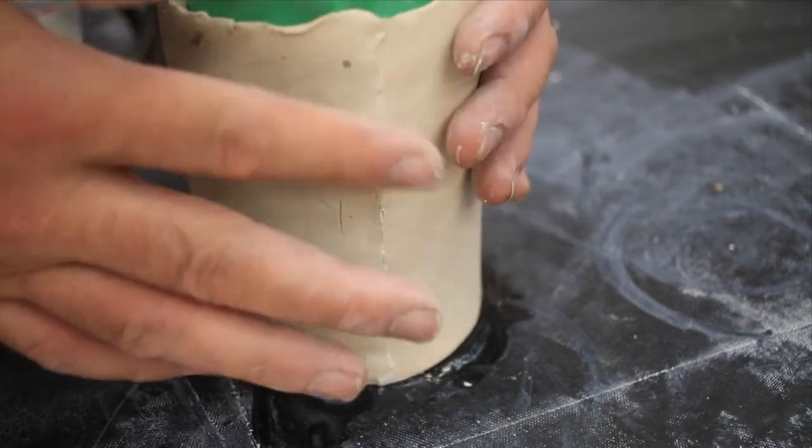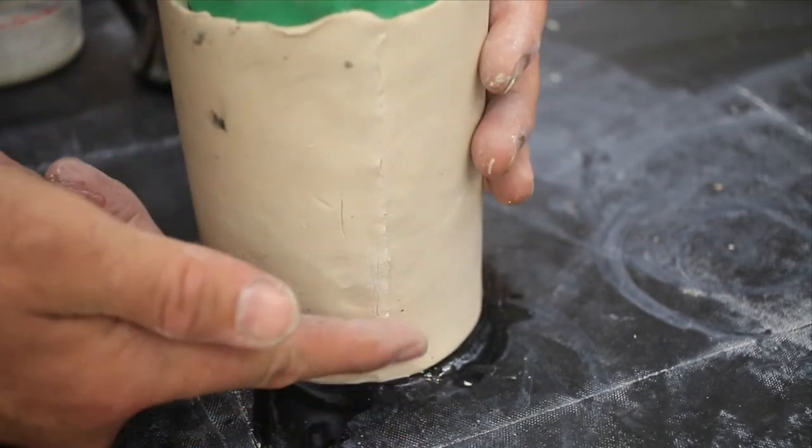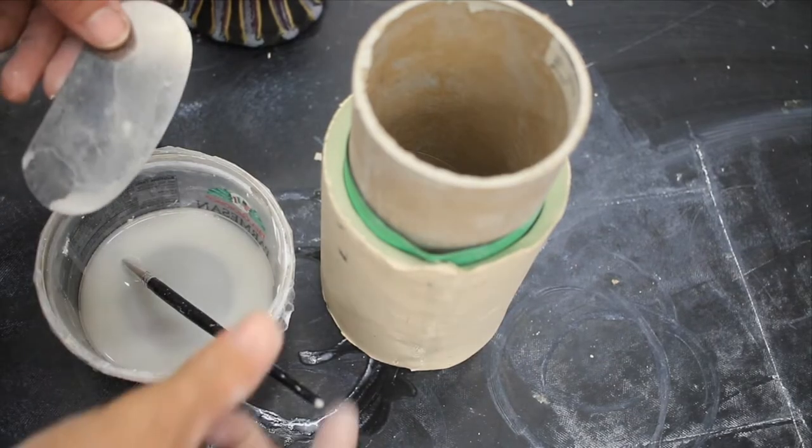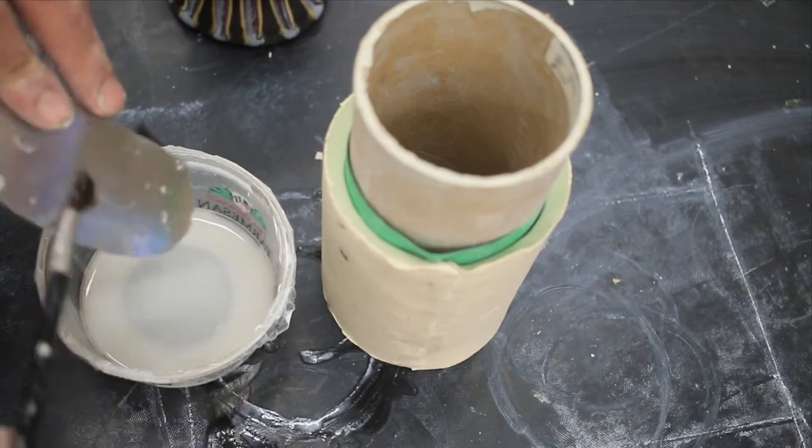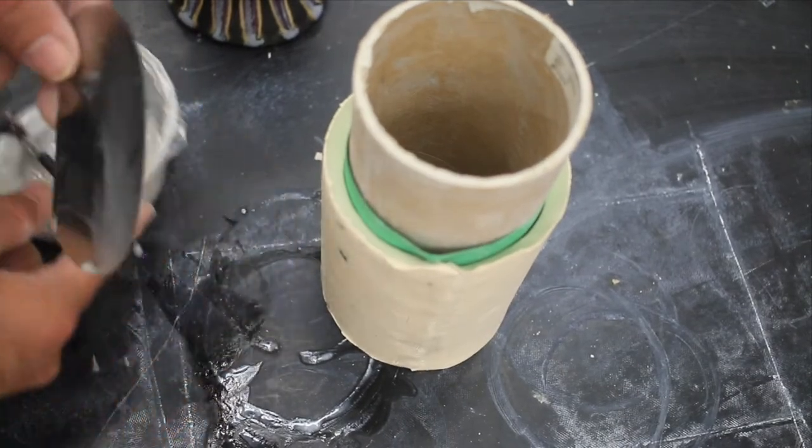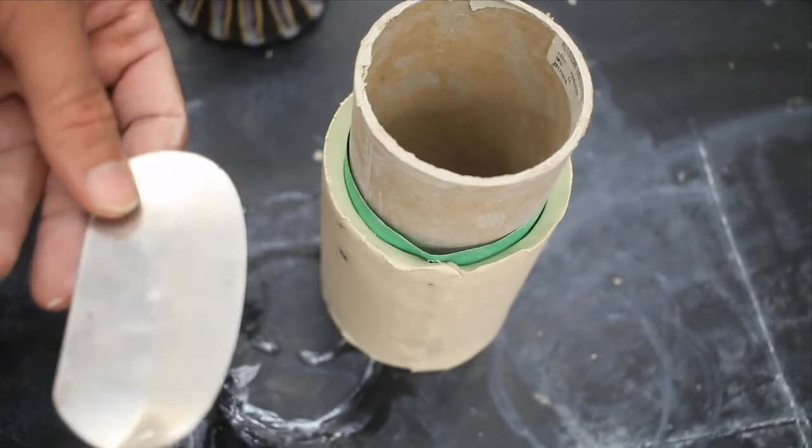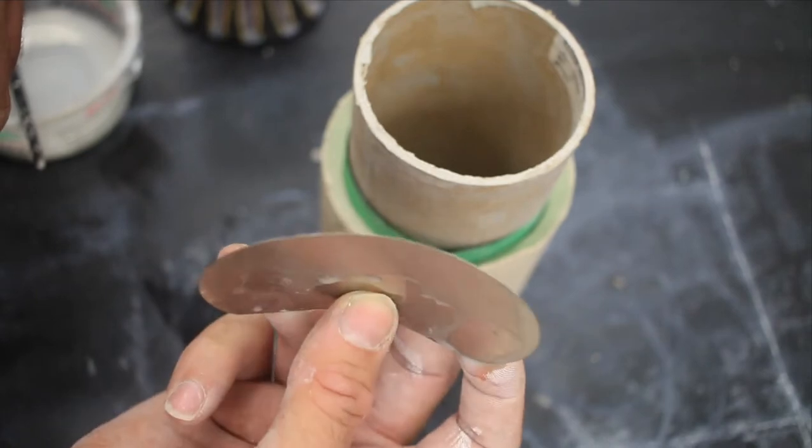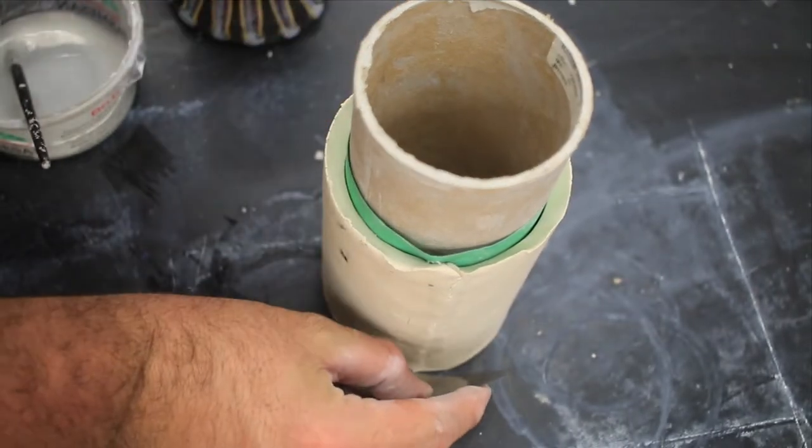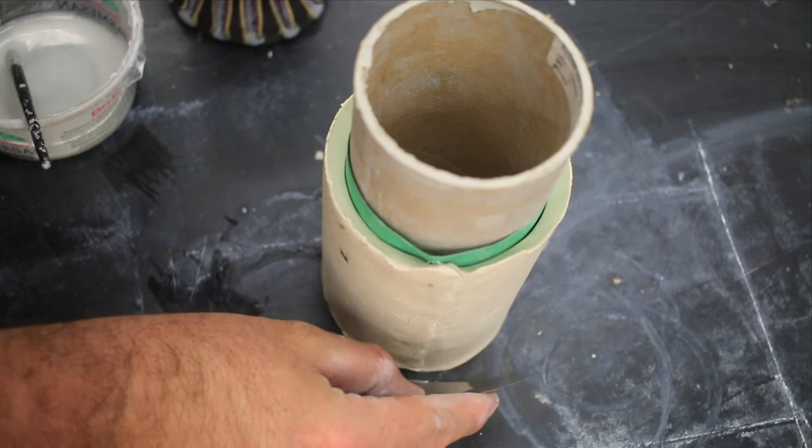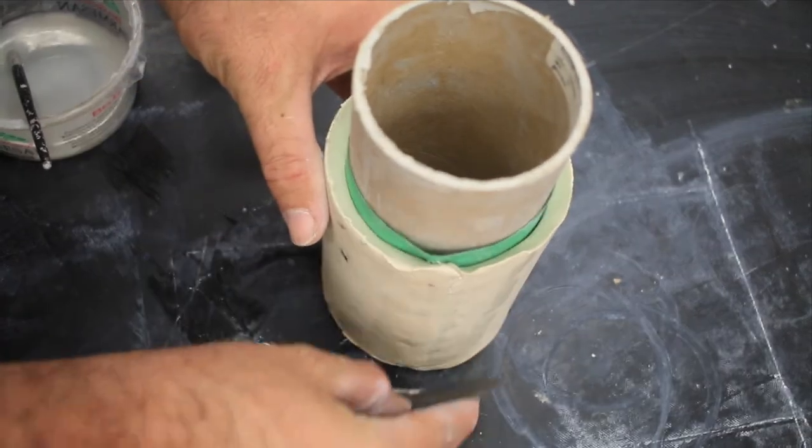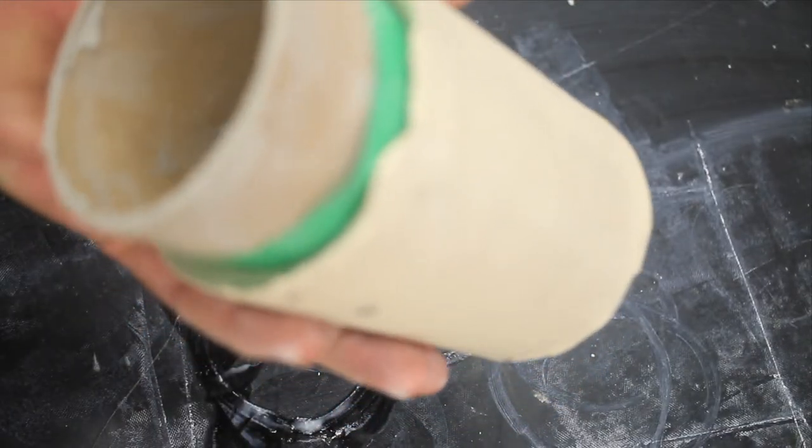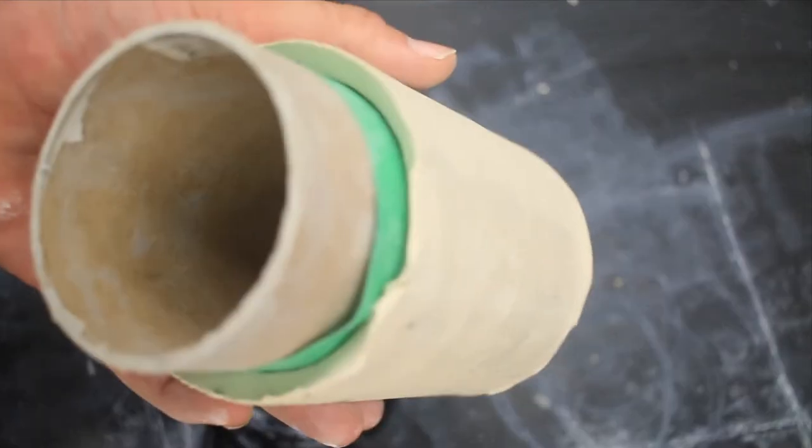This trick will make your cup very strong. Use a smooth metal rib, paint a little bit of water on it, and curve it to the curvature of the cup. Hold it parallel to the pot and rub it up the side of the joint. This will compress that clay together and push it against the paper, eliminating any visible seam and making a really great joint.